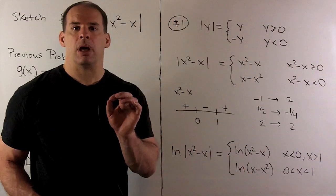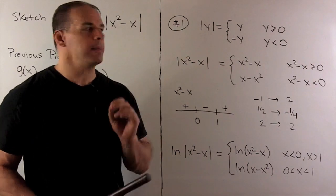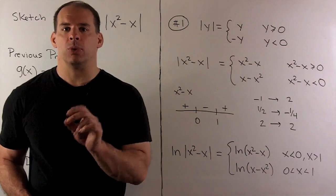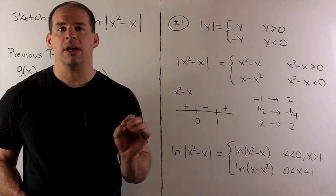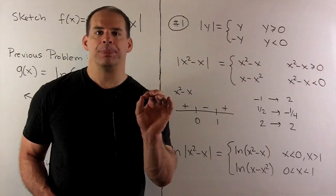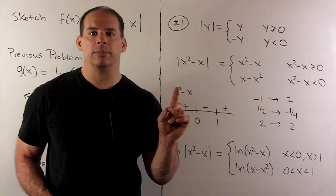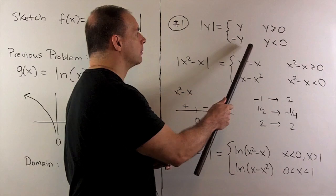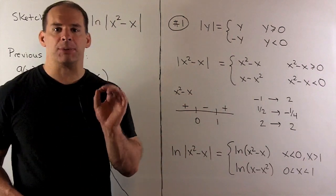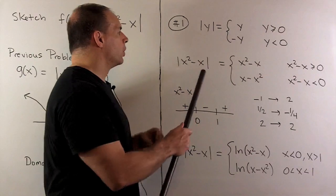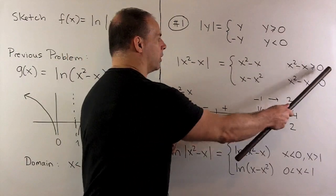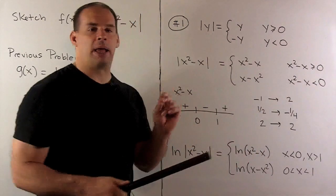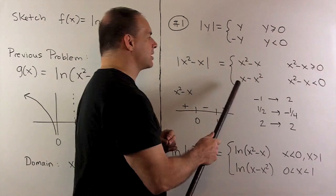Note the definition for absolute value of y: if y is greater than or equal to 0, we take the absolute value and just return our number — we do nothing at all. If y is negative, we remove the minus sign by multiplying by -1, so we return -y. That means for |x² - x|: when x² - x ≥ 0, we leave it alone; when x² - x is negative, we multiply by -1, giving x - x².